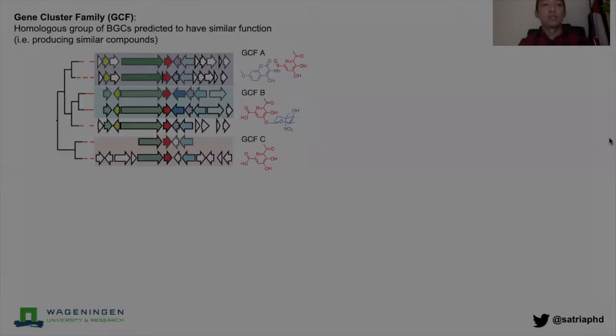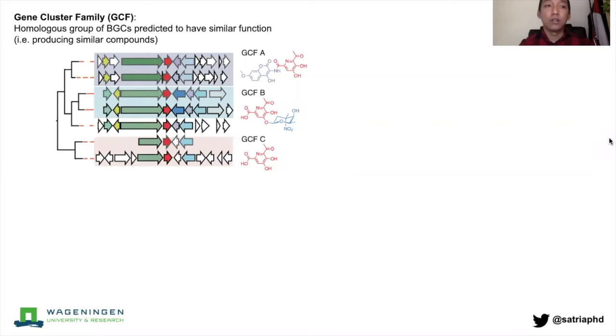If we want to study the evolution and function of BGCs, one thing we can do is to group them into what we call gene cluster family or GCF. Those BGCs sharing similar structures may also be predicted to share similar function or produce similar metabolic compounds.